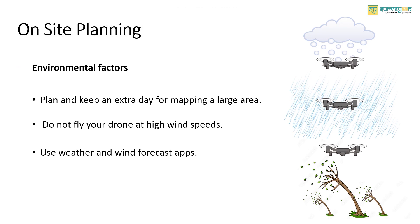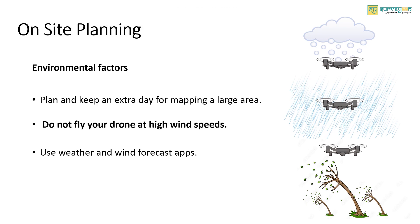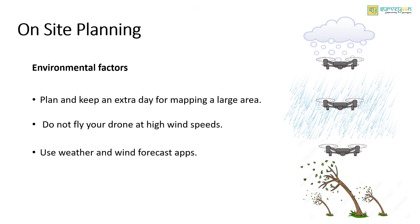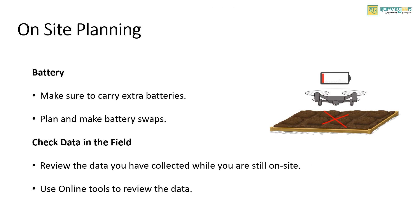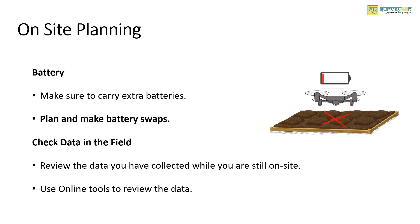There are many environmental challenges that can affect your drone survey. Plan and keep an extra day for mapping large areas, accounting for factors such as precipitation, wind, etc. Avoid flying the drone in high wind speeds, and use wind and weather forecasting apps to estimate conditions. Battery optimization will differ depending on the type of drone you use. Mapping large areas requires more than one battery. Carry extra batteries and plan efficiently to save battery life. The drone returns to home when the battery gets low; swap the battery and resume the mission, and the drone will fly back to the position where it triggered the return-to-home and continue.